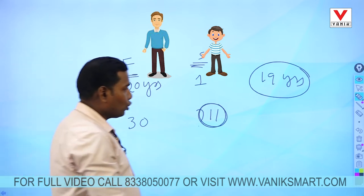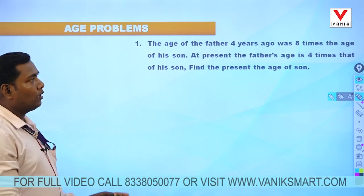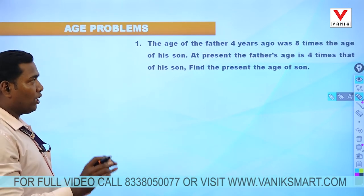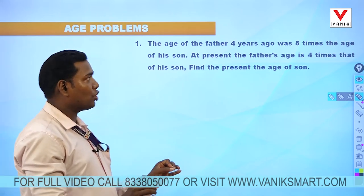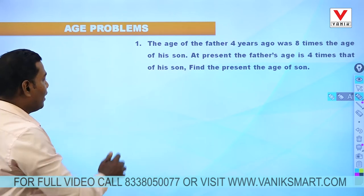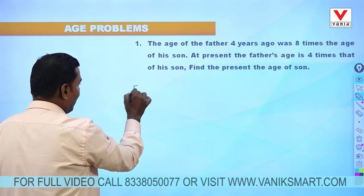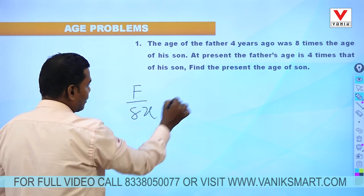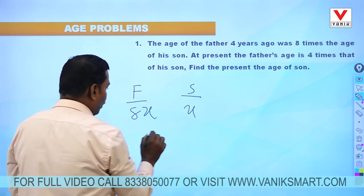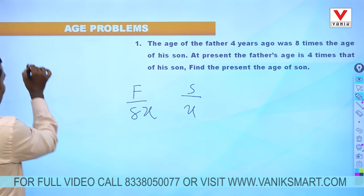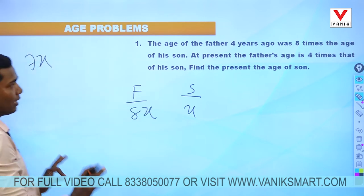Question 1: The age of the father 4 years ago was 8 times the age of his son. So father's age is 8x and son's age is x. The difference between father and son is 7x.